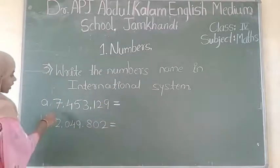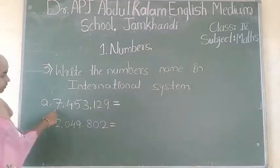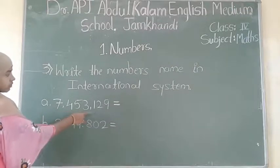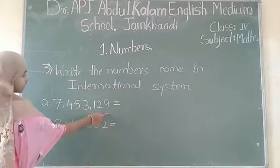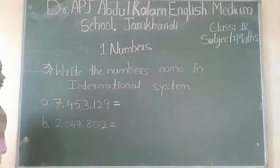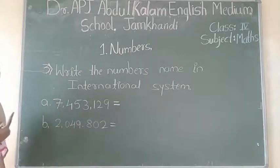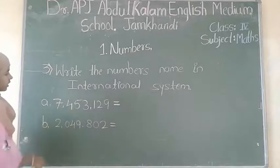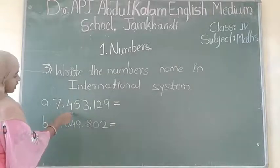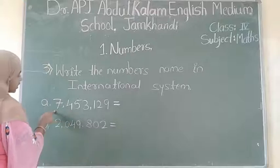The first one is 7,453,129. In the international system of place value, there are no lakhs and crores. Here we use millions directly, and after millions come the thousands numbers.